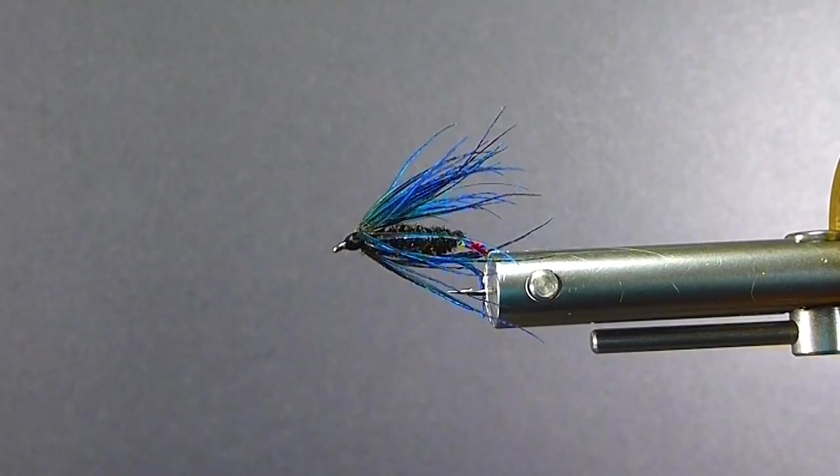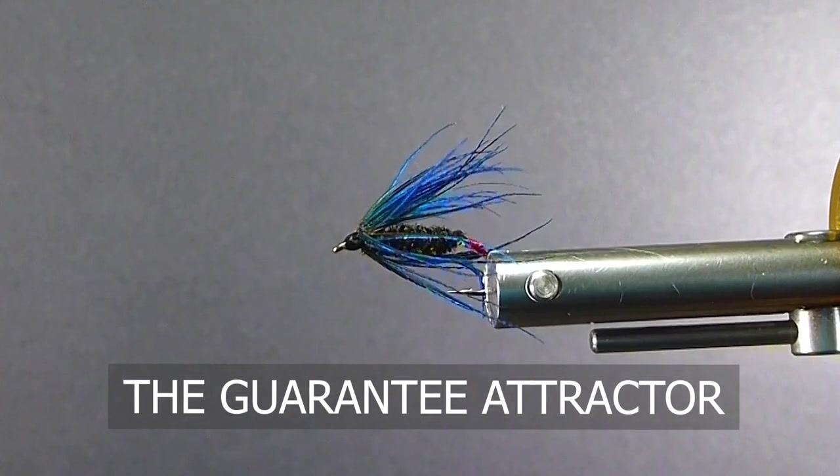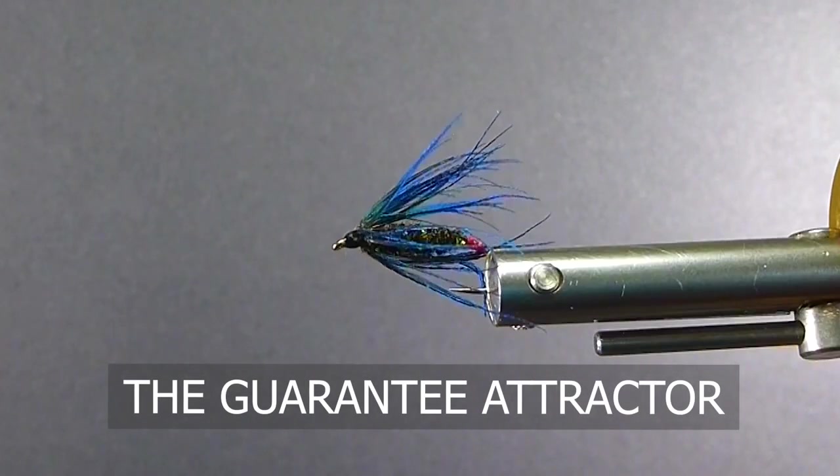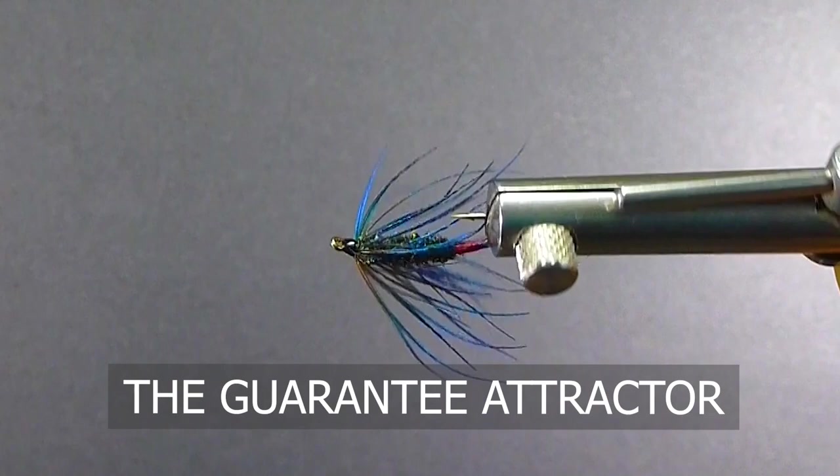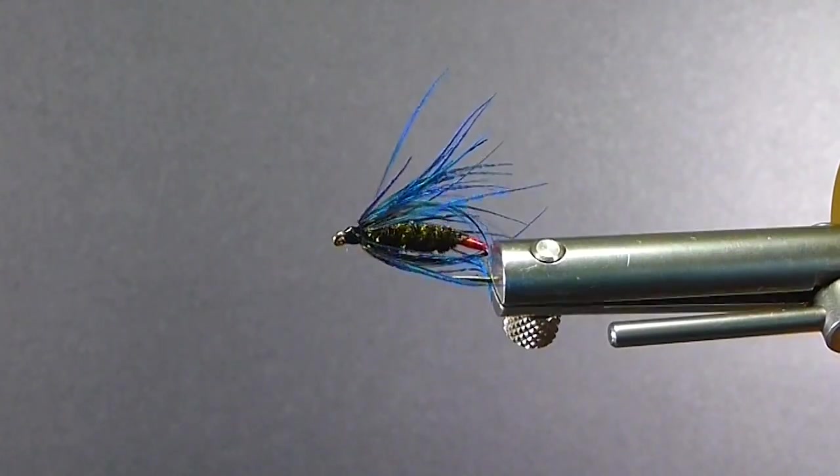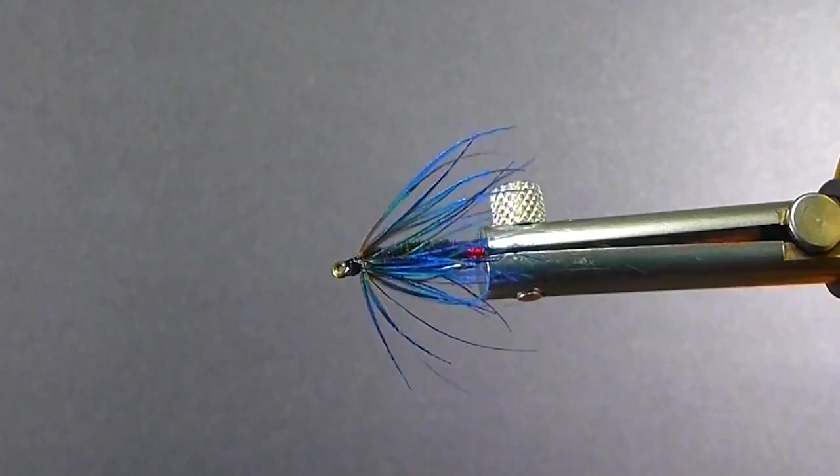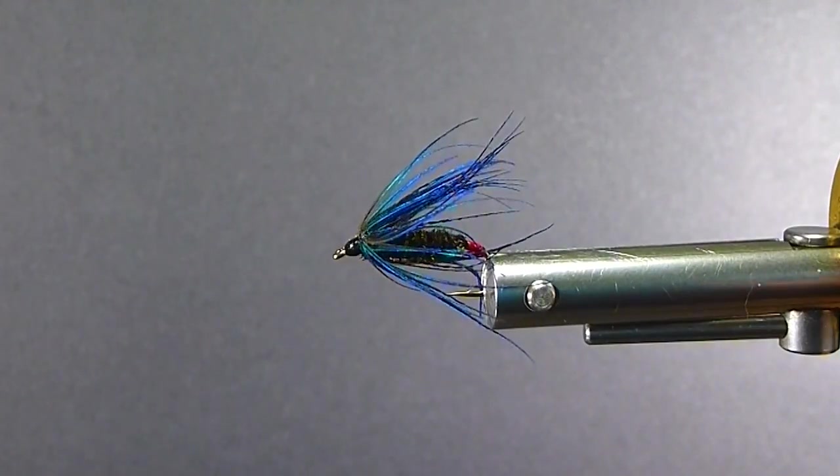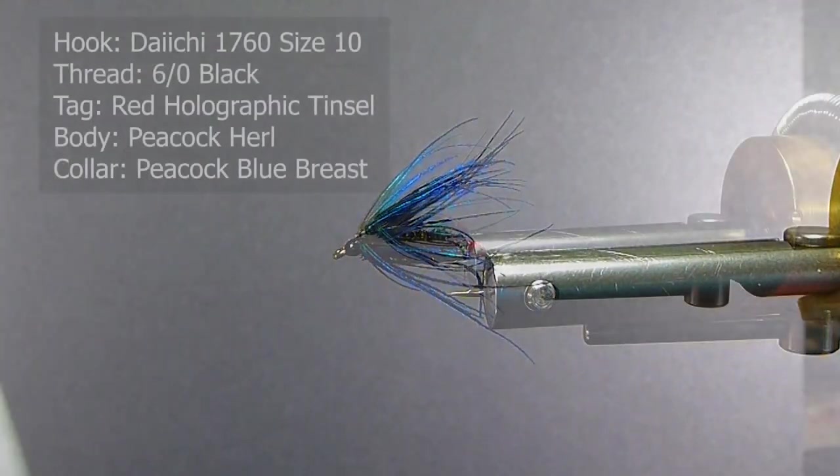Good day everyone, welcome to On The Bench. Today I'm going to show you how to tie a nice little fly searching pattern called The Guarantee, a fly that Wayne Redding from Calgary showed me many years ago. I've been fishing it and tying it for a number of years. It's a cute little fly that works very well, and here are all the materials you need to tie the fly.